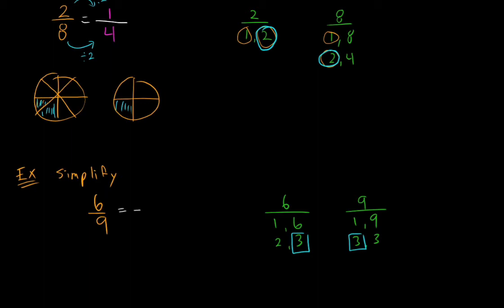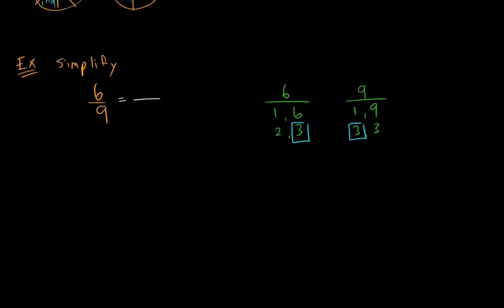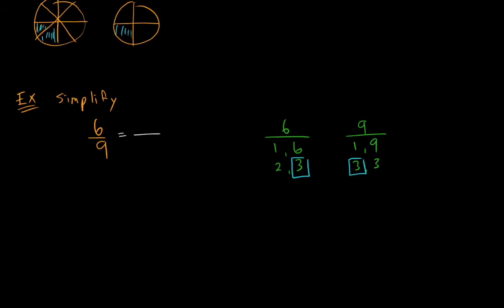So we're going to simplify our fraction. We're going to find an equivalent fraction that has smaller numbers, or smaller looking numbers. It's still an equivalent fraction, it's still the same value. So we're going to divide this one, and divide this one by 3, both top and bottom. So 3 and 3. And I end up with, that's going to be 2, and that's going to be a 3. So I've simplified 6 over 9 into 2 thirds.